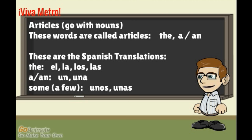Now let's change the topic and talk about articles that go with nouns. These words are called articles: the, a, an. In Spanish, 'the' is el, la, los, las. Note that 'él' meaning 'he' has an accent mark over the e to differentiate it from 'el' meaning 'the.' Then we have 'a' and 'an,' whose translations are 'un' and 'una.' And of course 'some' or 'a few' is 'unos' or 'unas.'